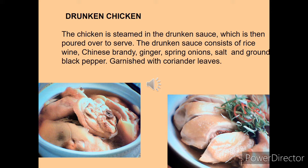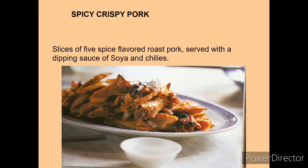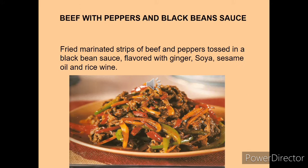Drunken chicken is served with drunken sauce — rice wine and other ingredients — poured over it at the last. Spicy crispy pork: five spice-flavored roast pork served with a dipping sauce of soy and chilies. Beef with peppers and black bean sauce: fried marinated strips of beef and pepper tossed in black bean sauce and flavored with ginger, soy, sesame oil and rice wine — all prepared in the wok.